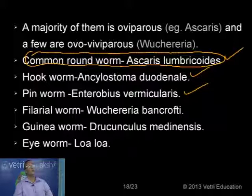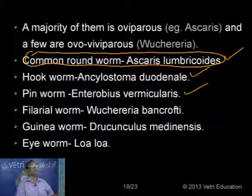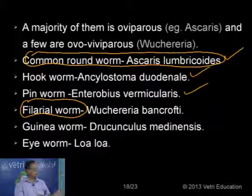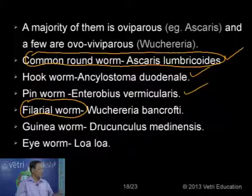There is a peculiar worm not found in the blood or intestine, but formed in the lymphatic system — that is the filarial worm, Wuchereria bancrofti, named after two scientists Wucherer and Bancroft. It is formed in the lymphatic system and lymph vessels. It enters the bloodstream only during nighttime.